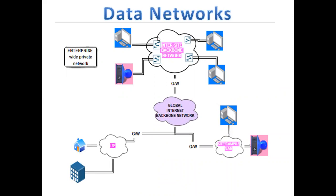This is a block diagram of the data network showing how data is communicated. If you want to access the internet for a small house or a small business, you can do so with the help of an ISP — internet service provider. For a single-site business, a server computer is there and many computers are connected to a campus network, like a college.